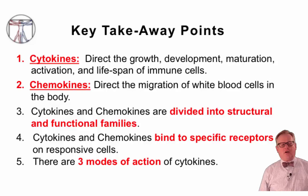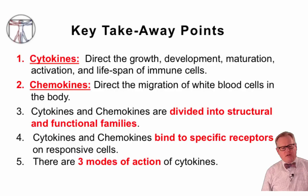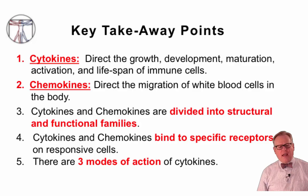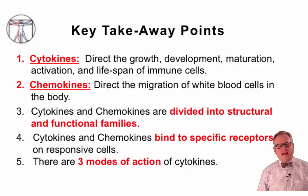The key takeaway points for this video are: cytokines direct the growth, development, maturation, activation, and lifespan of immune cells; chemokines direct the migration of white blood cells within the body into and out of tissues; cytokines and chemokines are divided into structural or functional families; cytokines and chemokines bind to specific receptors and send signals into responsive cells, altering protein function and changing gene transcription; and there are three modes of cytokine action — autocrine, paracrine, and endocrine.